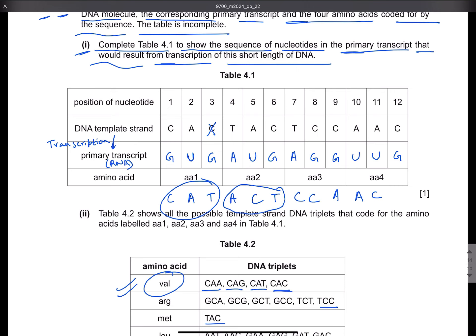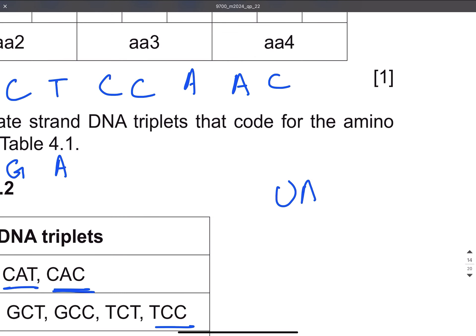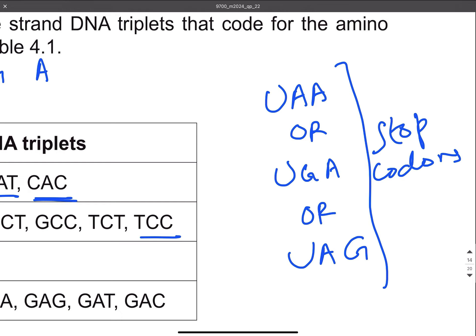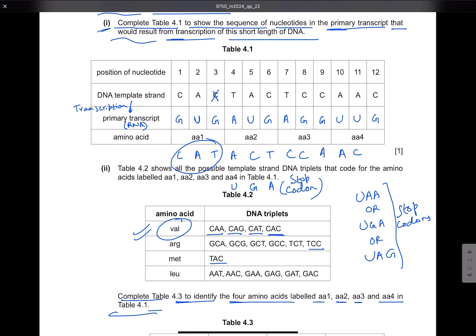However, if we look at the next triplet code, this is ACT. ACT is basically a stop code. The complementary codon to ACT is UGA. You should remember that UAA, UGA, and UAG are stop codons. So the triplet code ACT is complementary to the codon UGA — a stop codon has arisen.